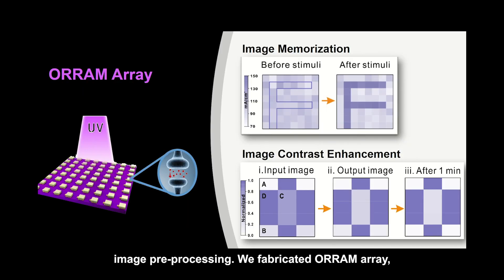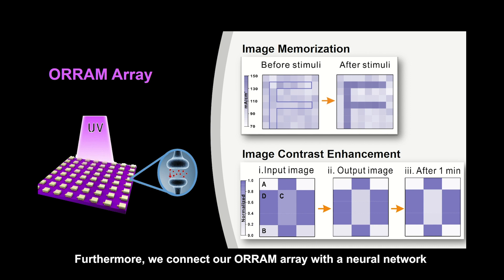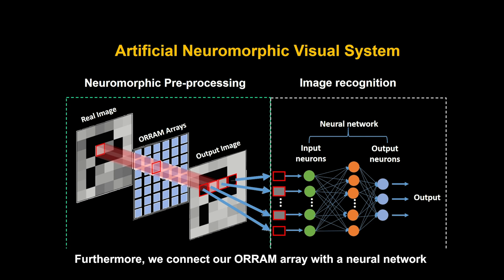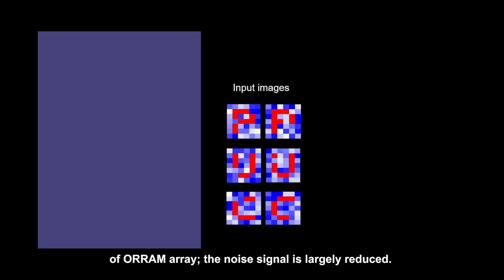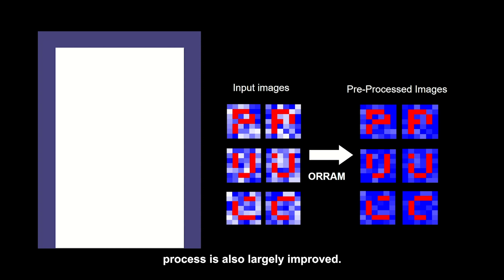We fabricated a RAM array. The image of the letter F can be memorized by using synaptic plasticity, and the contrast of the image can be further enhanced by the preprocessing function. Furthermore, we connected our RAM array with a neural network for image recognition. With the preprocessing of the RAM array, the noise signal is largely reduced, and we can see much clearer red letters from the blue background. The accuracy in subsequent image recognition is also largely improved.